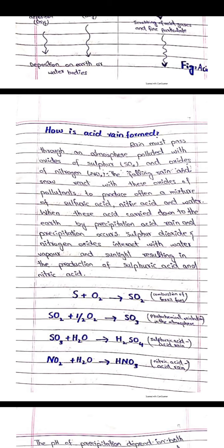When rain passes through a polluted atmosphere containing oxides of sulfur and oxides of nitrogen, the falling rain reacts with these oxides of pollutants and these are further mixed with atmospheric water to form sulfuric acid and nitric acid. Sulfur dioxide and nitrogen oxide interact with water vapor and sunlight, resulting in the production of sulfuric acid and nitric acid.